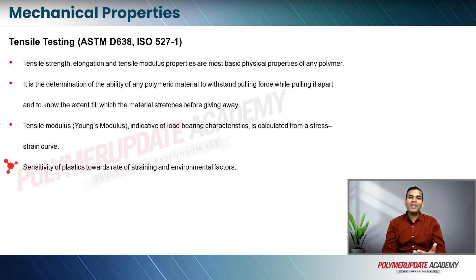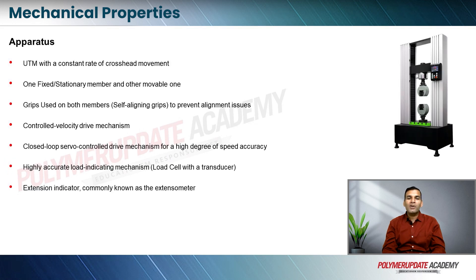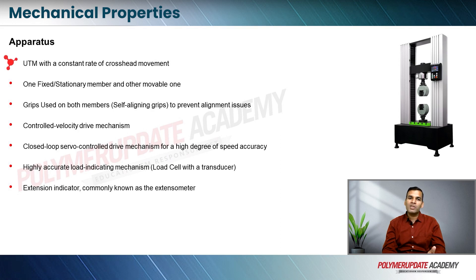Plastics are very sensitive towards the rate of straining and environmental factors. As you can see in the image, it denotes a UTM or universal testing machine. For tensile testing, the apparatus we are going to use is a universal testing machine and it should have a constant rate of crosshead movement.